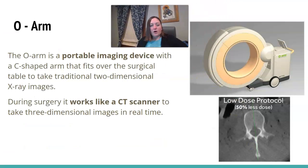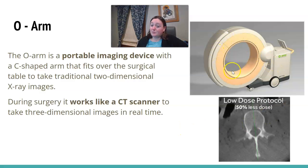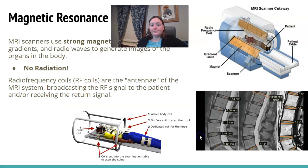The O-arm is a portable CT scanner. Neurosurgeons have found it to be very useful. It works just like a CT scanner — it is a little bit clunky to drive around, but definitely a benefit to neurosurgeons.